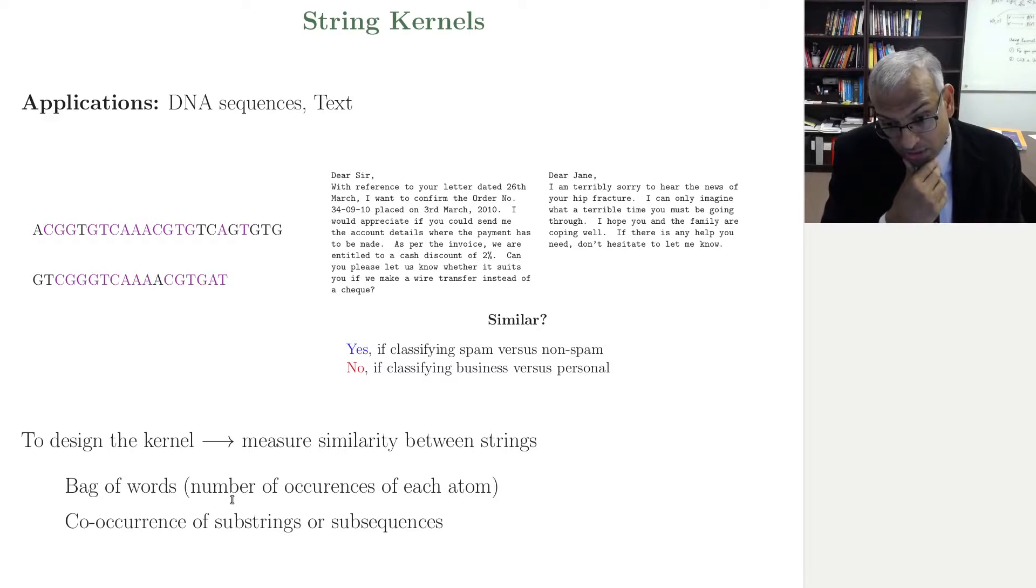What I want to show you here is that sometimes you have to be relatively careful in constructing your similarity measure. So I'm showing you two pieces of text here. Dear Sir, with reference to your letter dated, I want to confirm that the order number placed, we would appreciate if you can send me the account details to which I must pay, we are expecting a 2% discount, and so on and so forth. So this is clearly a business email.